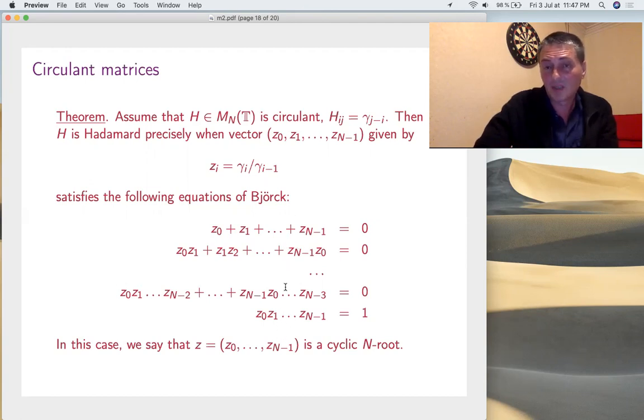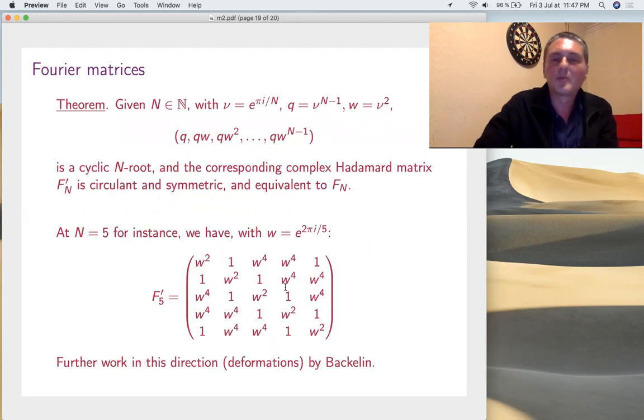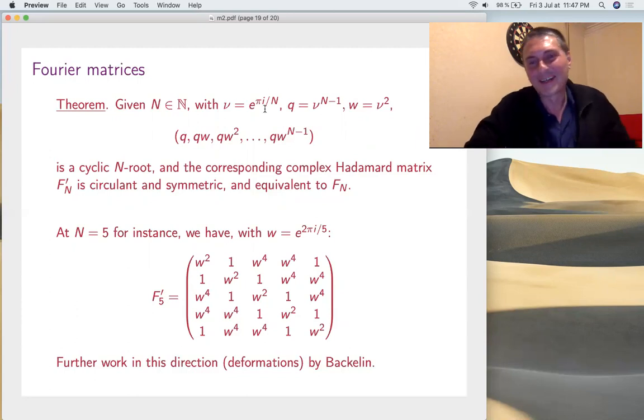It's the same thing, Hadamard matrix, circulant and cyclic roots. And with this, you can prove, for instance, very easily that the Fourier matrix F_N can be put in circulant form. As an example, here is F_5, put in circulant form, and what I found here, the proof is very simple, because this is obviously Hadamard, which has to compute, well, again, can only be Fourier, right? But, well, that's more than a joke.